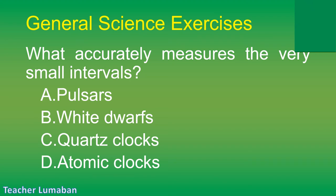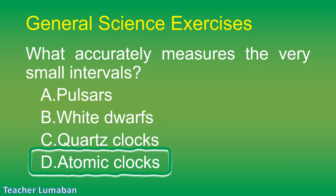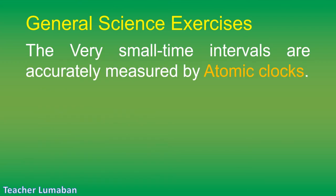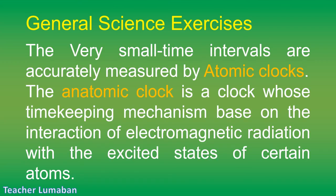The correct answer is Letter D: atomic clocks. Very small time intervals are accurately measured by atomic clocks. The atomic clock is a clock whose timekeeping mechanism is based on the interaction of electromagnetic radiation with the excited states of certain atoms.